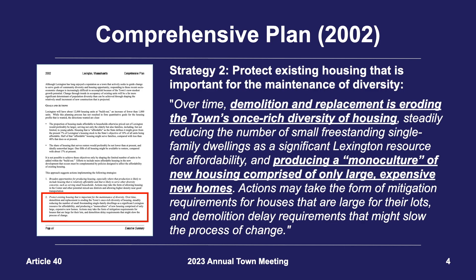Fast forward five years to 2002 when Lexington's previous comprehensive plan was completed. The plan wrote that the demolition and replacement of existing homes was eroding the town's once rich diversity of housing, resulting in a monoculture of only large and expensive new homes. The plan further called for mitigation in the form of zoning policy to slow this process of change.